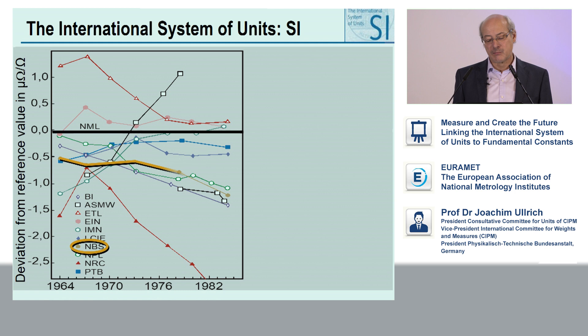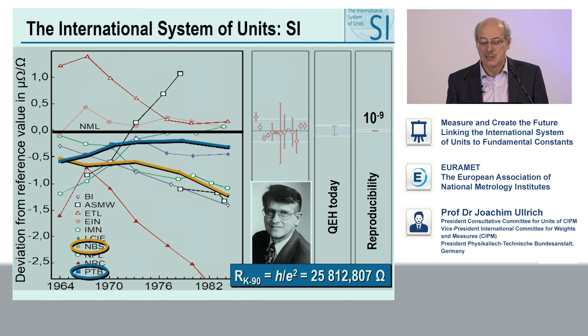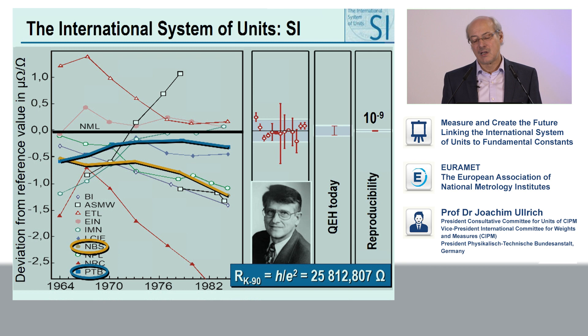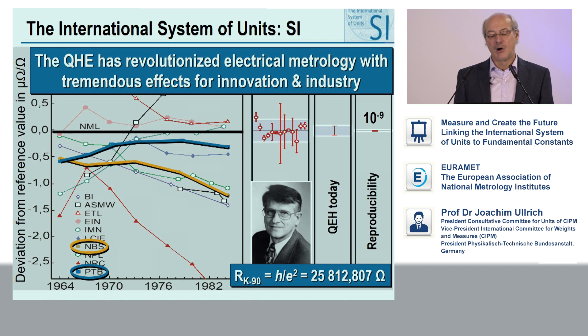You can see, for instance, the realization by the National Bureau of Standards, which nowadays is NIST, the NMI in the US, or the PTB, the National Metrology Institute in Germany. There is a large deviation between the realizations of these different NMIs. With the advent of the quantum Hall effect, the situation improved tremendously and immediately. The quantum Hall effect today can be realized with a very small uncertainty, and we have a reproducibility of the order of 10 to the minus 9 — excellent compared to what we had before. One can really say that the quantum Hall effect has revolutionized electrical metrology with tremendous effects for innovation and industry.